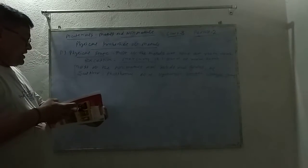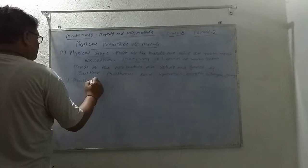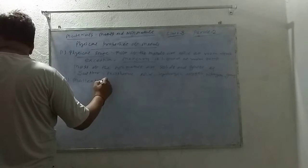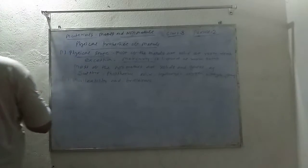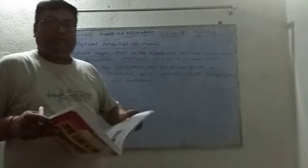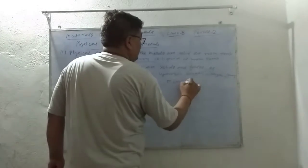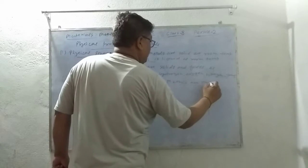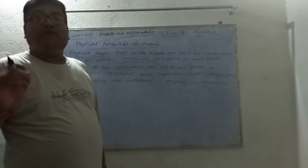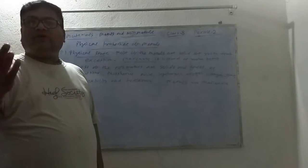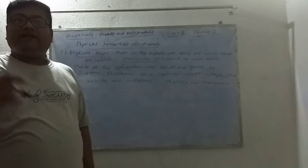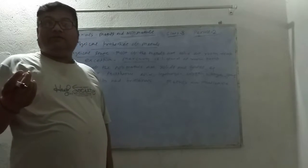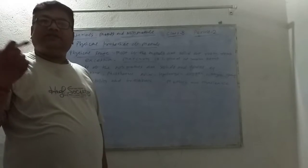Another property is called malleability. Most of the metals are malleable. Malleable means you can hammer it — metals can be hammered into shapes.